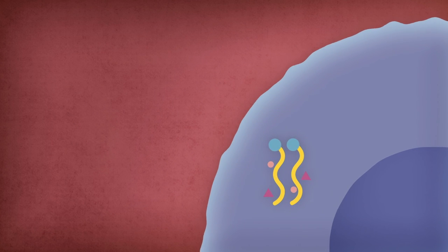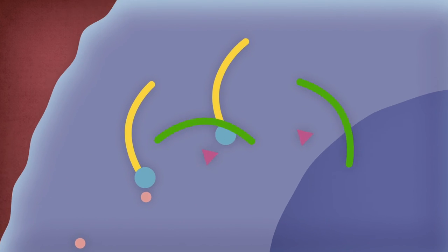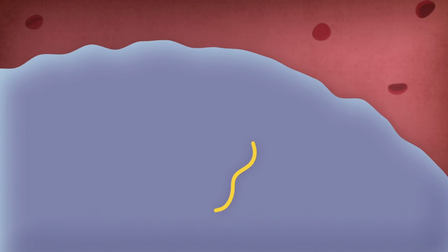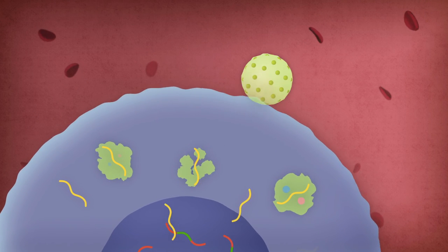Once inside a CD4 cell, the virus modifies the genetic material. This means that HIV adapts the human genes so that our cells make copies of the virus. In just one day, our cells make billions of copies of the virus.